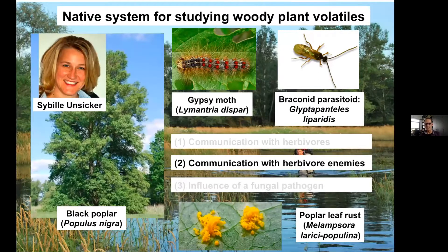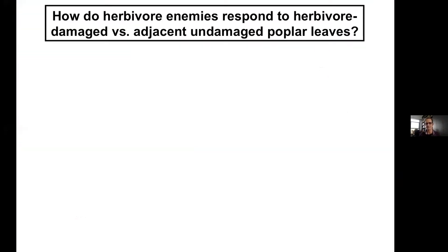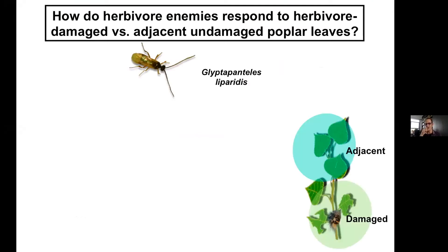Let's move on to story number two about the parasitic wasp. In the early days when people started figuring out there were volatiles coming from herbivore-damaged plants, the exciting hypothesis was that plants were calling for help — attracting herbivore enemies. The argument was that the plant calls for help and the volatiles bring in enemies. Unfortunately, there hadn't been a lot of evidence in support of this, especially in natural systems and woody plants.